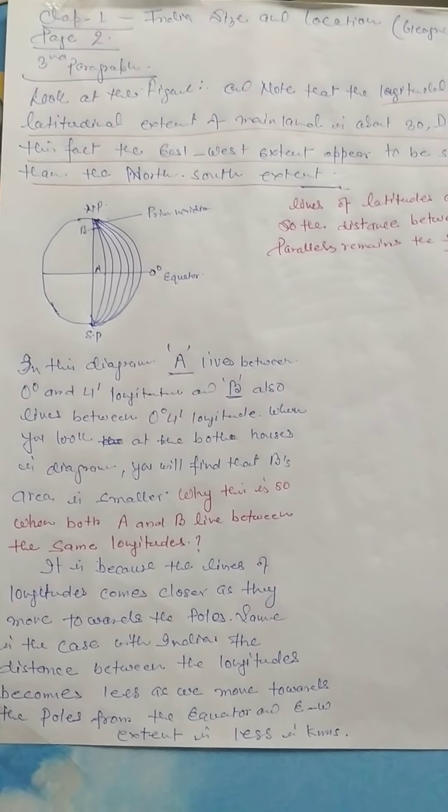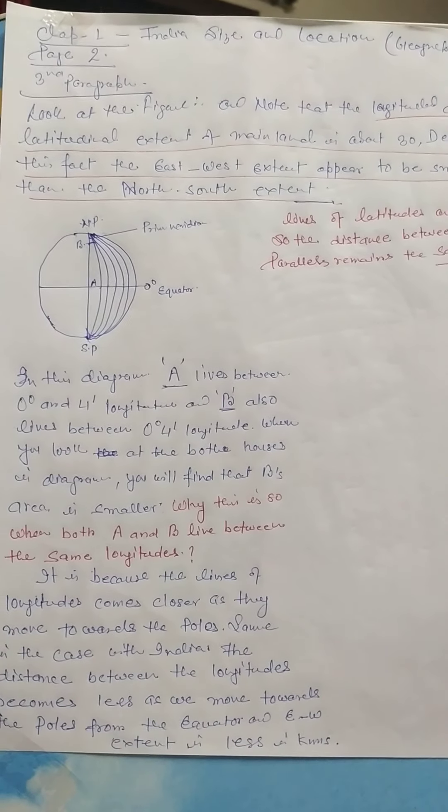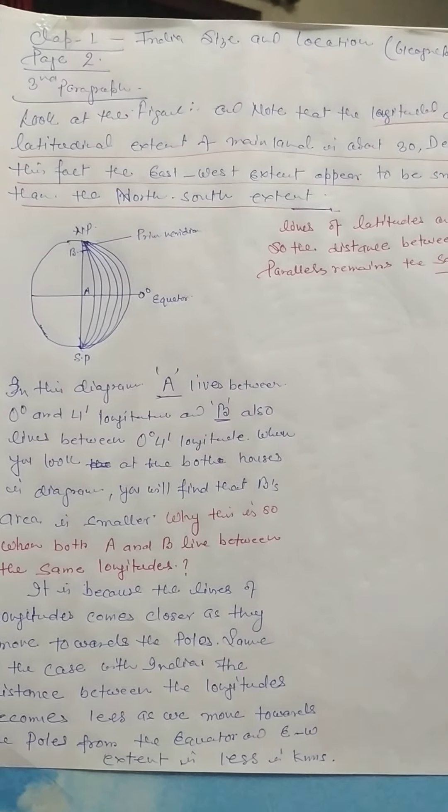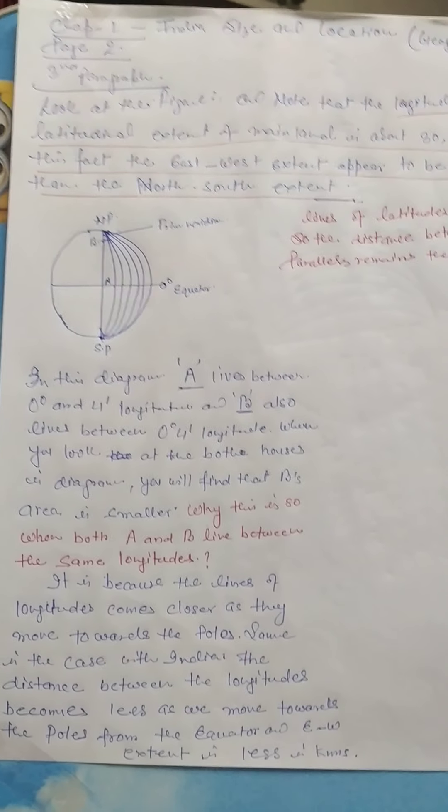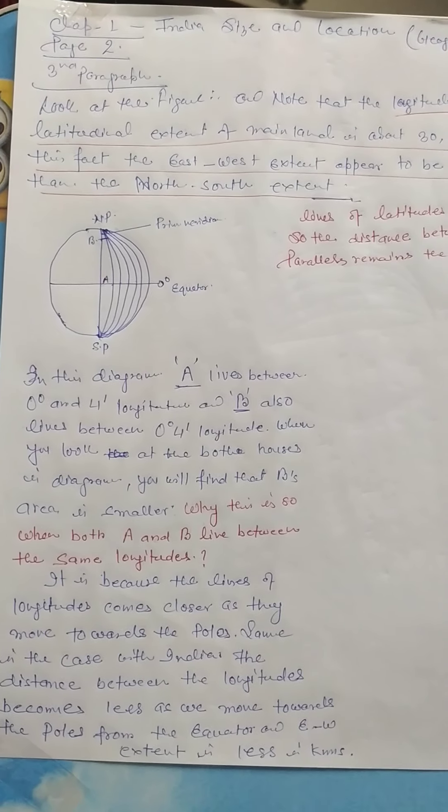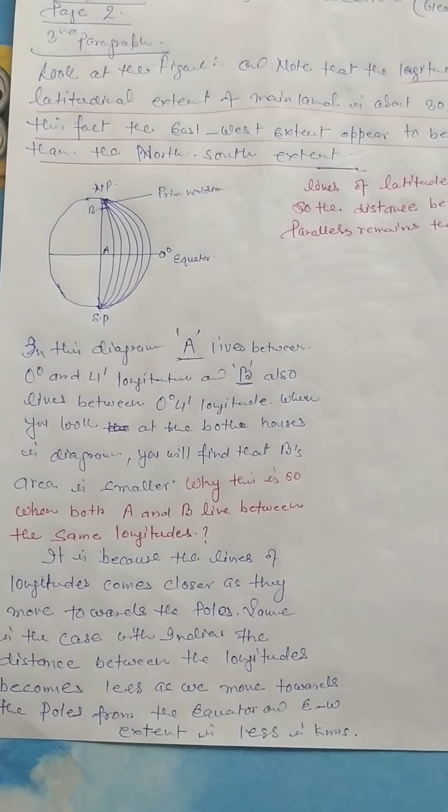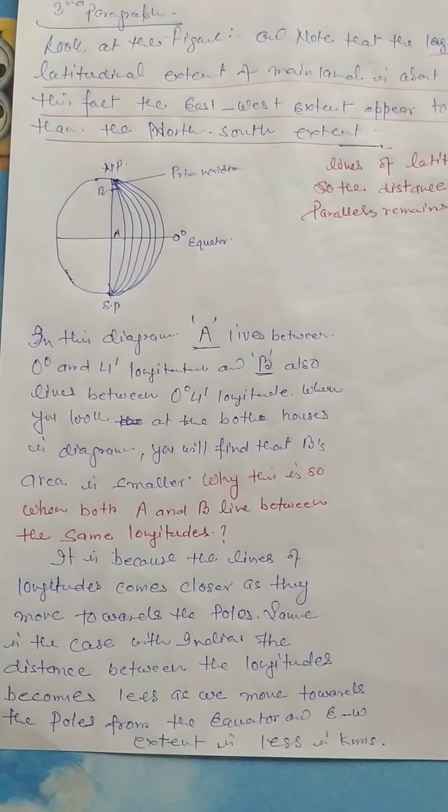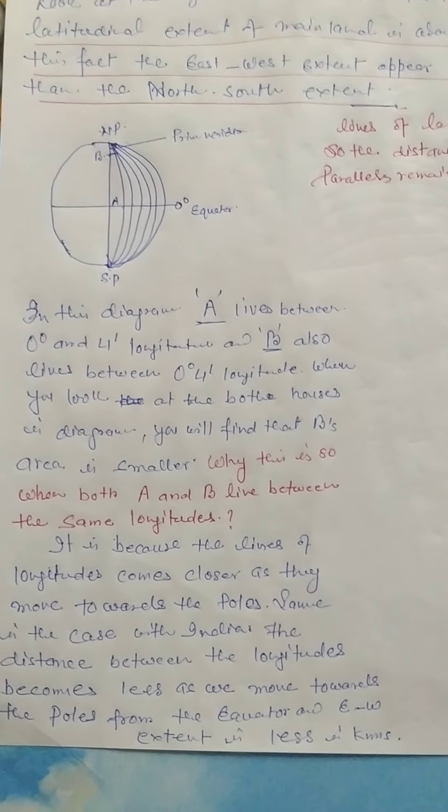This line denotes the map of India. Note that the longitudinal and latitudinal extent of mainland is about 30 degrees. Despite this fact, the east-west extent appears to be smaller than the north-south extent. What is the reason? Try to understand.